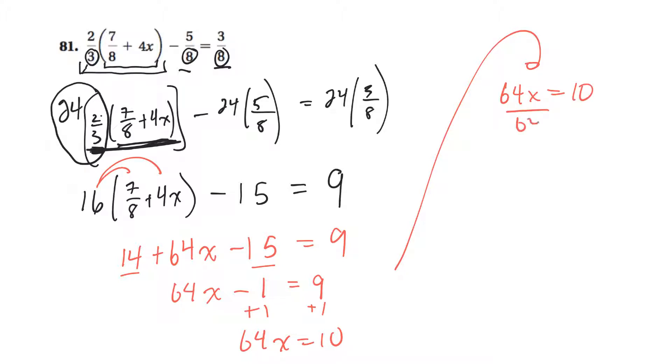Divide both sides by 64. So I'll get x is equal to 10 over 64, which probably I can simplify. I think 2 will go into both of those. So 2 goes into 10, 5. And 2 goes into 64, 32 times. So x is equal to 5 over 32.